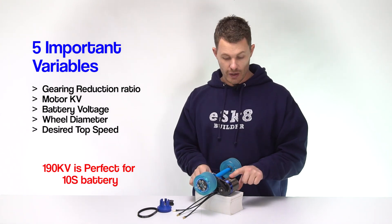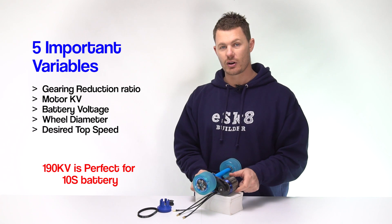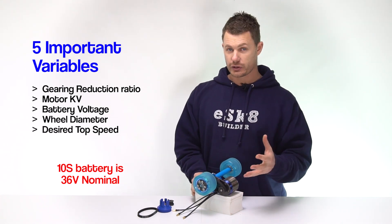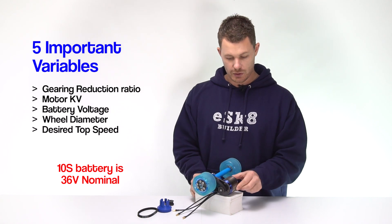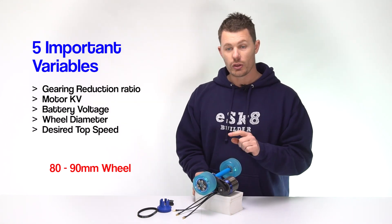The motor KV, revolutions that your motor spins based on voltage. The battery voltage itself because that dictates the RPM of the motor.